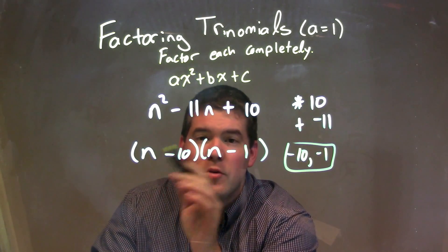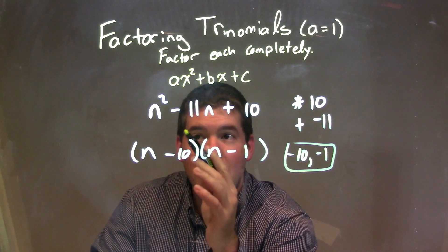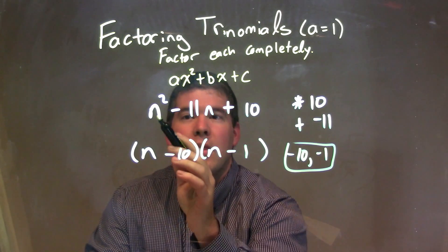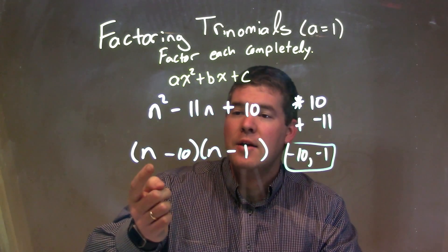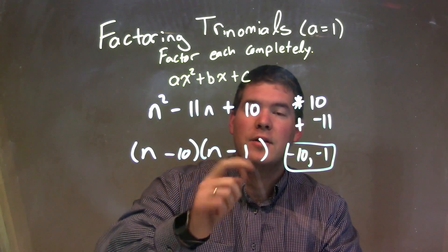And you can also see if we multiply this back out, distribute it, we would get what's out of the above, right? The n squared minus 11n plus 10. So again, our final answer here is n minus 10 times n minus 1.